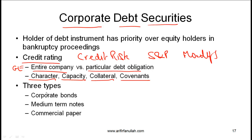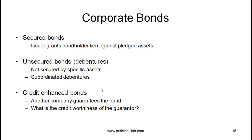In terms of specific types of debt securities, you need to understand the three major categories: corporate bonds, medium term notes, and commercial paper. Corporate bonds are probably the largest market — they are basically bonds issued by a corporation, and here you need to understand some important terms.